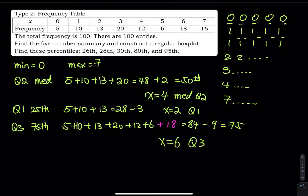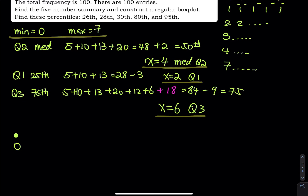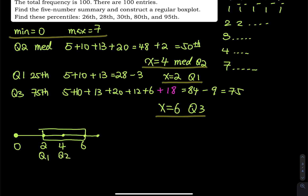Let's look at the final five-number summary: minimum is zero, Q1 is two, Q2 (median) is four, Q3 is six, and maximum is seven. Now I can draw the box plot: starting at zero, then seven, then Q1 at two, Q2 at four, and Q3 at six. The box between two and six represents the middle 50%. That's how you get the box plot.